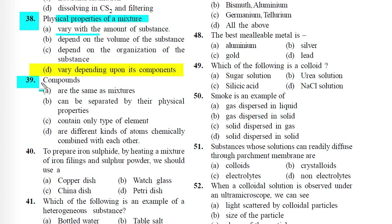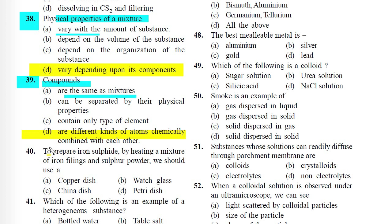Question 39: Compounds: A) Are the same as mixtures, B) Can be separated by their physical properties, C) Contain only one type of element, D) Are different kinds of atoms chemically combined with each other. Correct answer is D — compounds are different kinds of atoms chemically combined with each other.